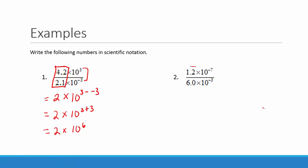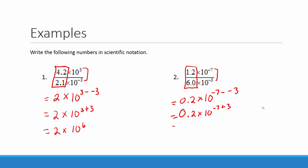Next, we will divide the numbers in front of the powers of 10. 1.2 divided by 6 is equal to 0.2. Then we will subtract our exponents — the top exponent minus the bottom exponent — so we have negative 7 minus negative 3, which is equal to negative 7 plus 3, which is equal to negative 4. This one is not in scientific notation.